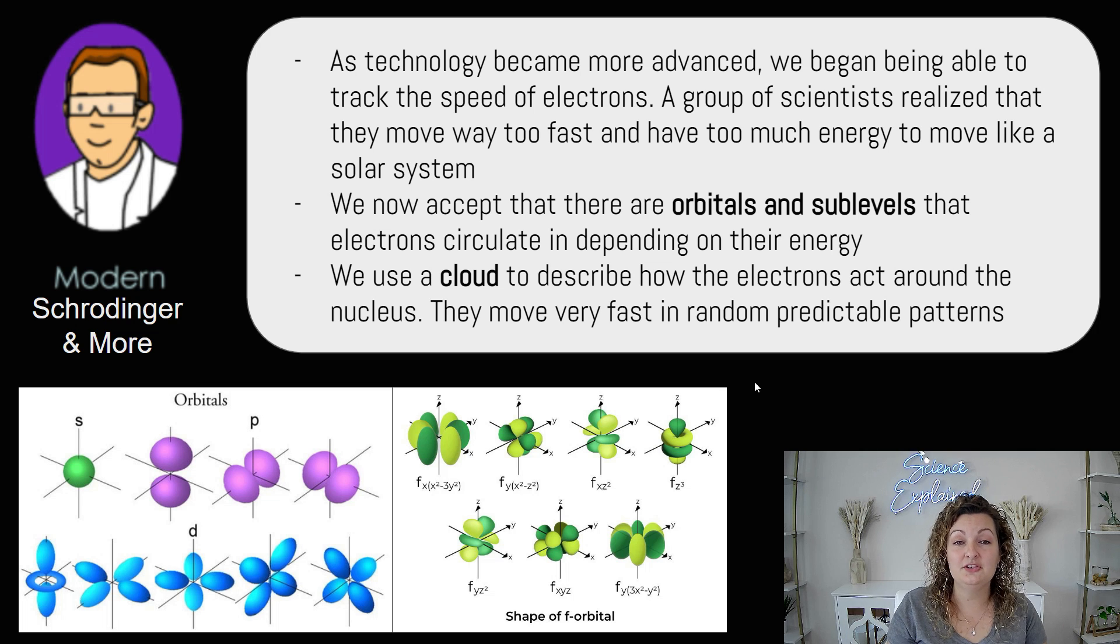So then the next one that really came along is our current model. You can hear it known as the modern model or even the quantum model, and that's just because we have new advanced technology now. So now we can determine the speed of an electron because we know how fast they're moving. We know that they can't be moving perfectly around the nucleus, like the planetary model that Bohr suggested. They have way too much energy. They're going way too fast to do that. So now we accept that there are orbitals and sub levels within what we now call an electron cloud.